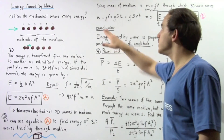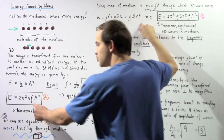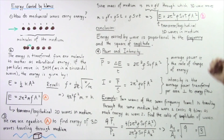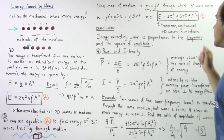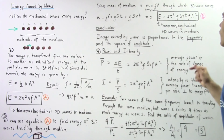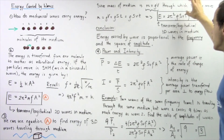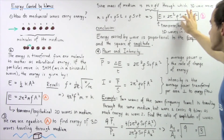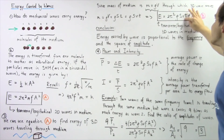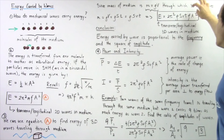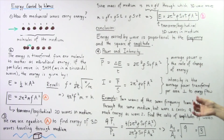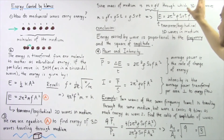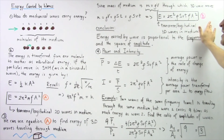If we take equation A and plug this mass — the entire quantity ρ·S·v·t — into the mass term in equation A, we get the following equation. The energy of a three-dimensional wave equals 2π² multiplied by density, multiplied by cross-sectional area, multiplied by the velocity of the propagating wave, multiplied by time, multiplied by frequency squared, multiplied by the square of the amplitude. This is the equation for transverse or longitudinal three-dimensional mechanical waves propagating in a medium.